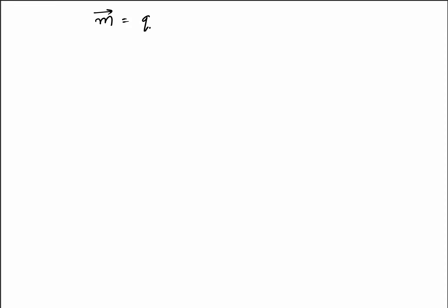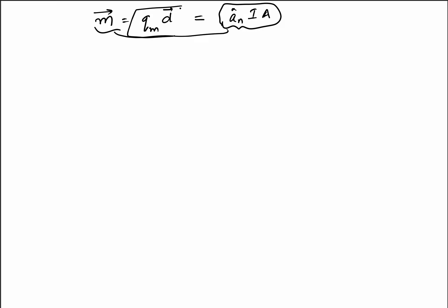Similar to the electric dipole, we can write that there exists a magnetic dipole given by the magnetic charge times the distance between the negative and positive magnetic charges. In reality, as we have seen in the previous lecture, the magnetic dipole is simply the current times the area.